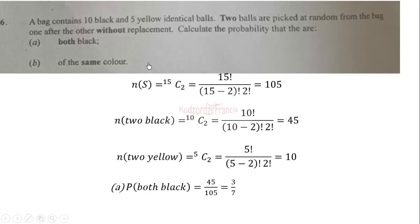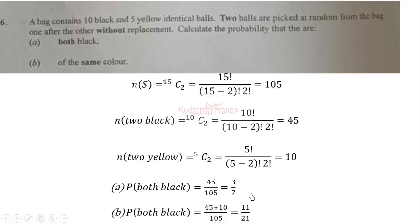The second part asks for the probability that they are of the same color, meaning both are black or both are yellow. So we add the two favorable outcomes and express over the sample space, giving us 11 over 21.